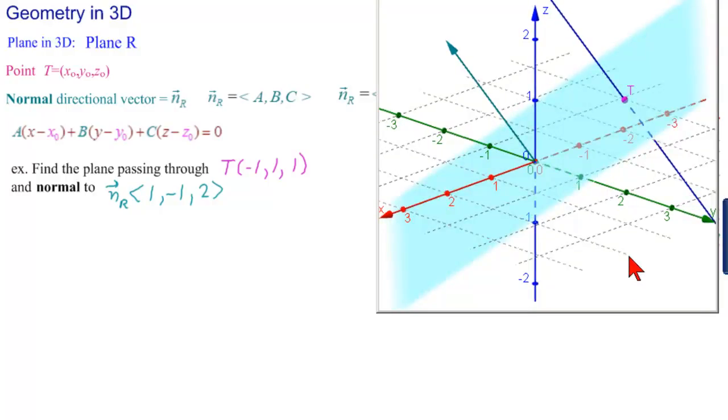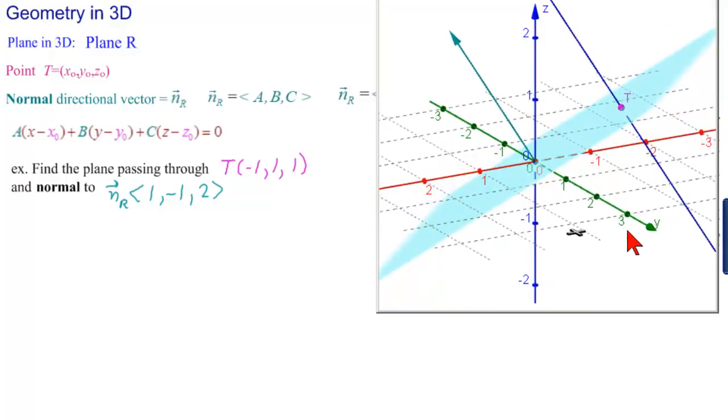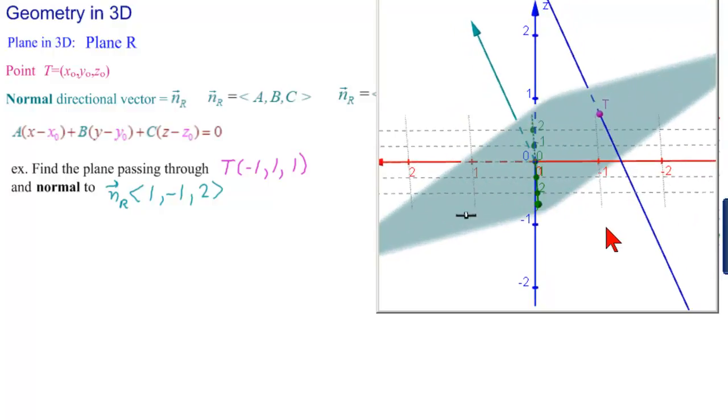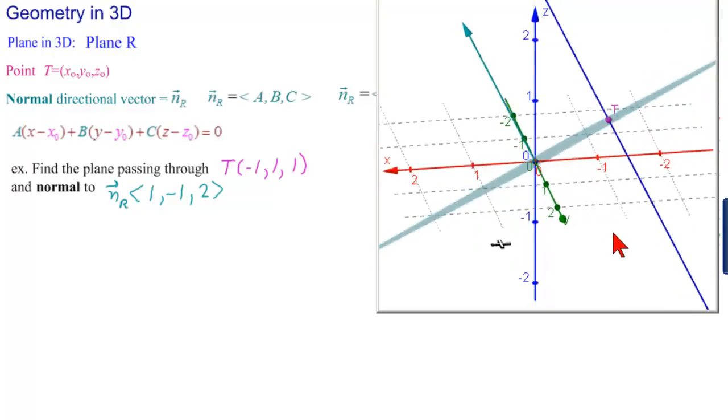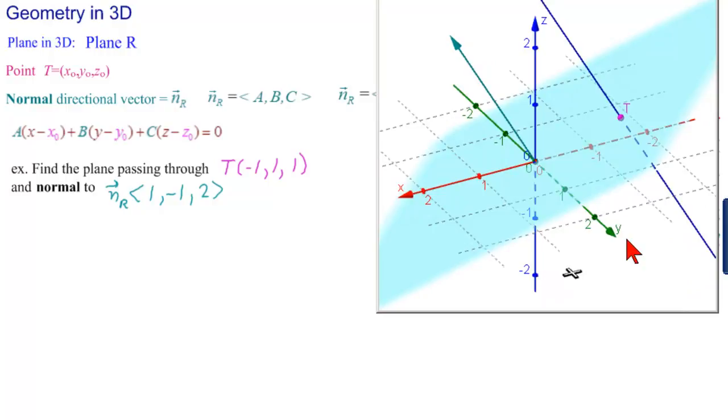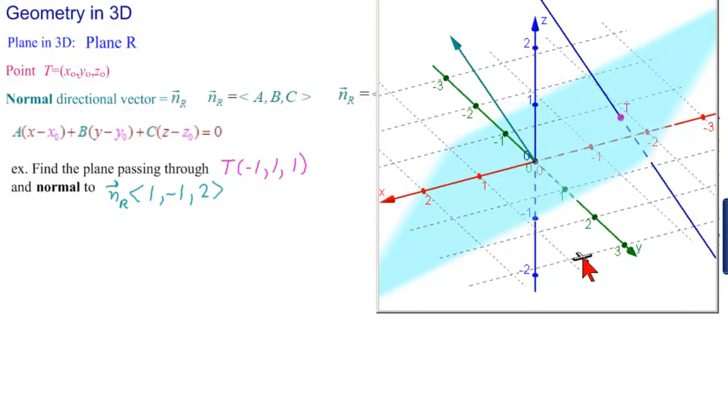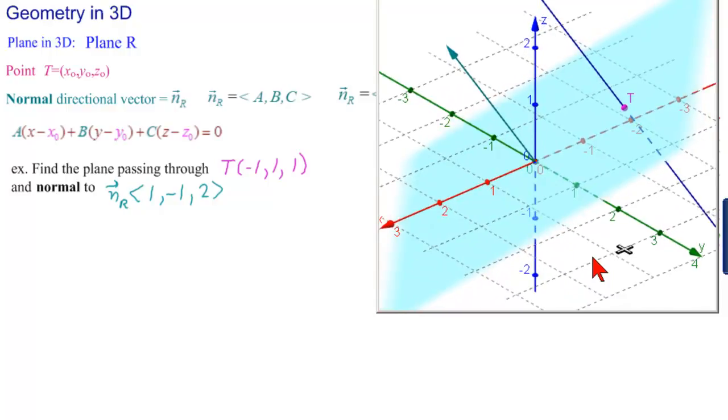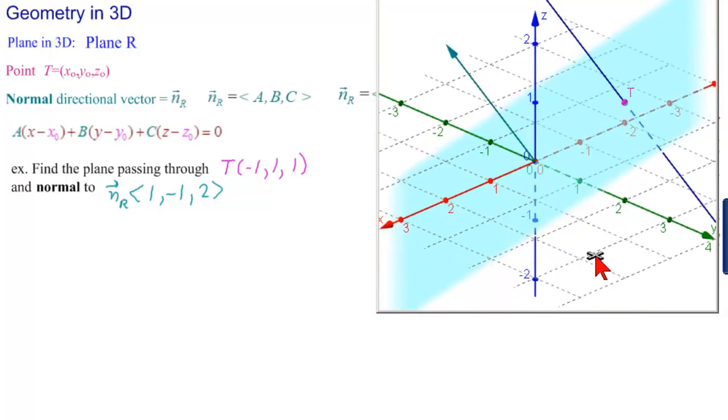So now let's rotate this so that we can see that the plane, in fact, passes through T and is normal to the vector N to the line. Here we go. There we can see it's normal and passing through the point T. And now turning it back, we can see that where the line is dotted, the line has passed through the plane and is underneath the plane there.